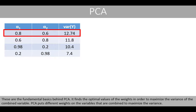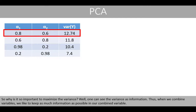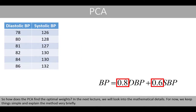According to our analysis, we select weights 0.8 and 0.6 because they generate the maximum variance of the combined variable. These are the fundamental basics behind PCA — it finds optimal weight values to maximize the variance of the combined variable. So why is it so important to maximize the variance? One can see variance as information — thus, when we combine variables, we want to keep as much information as possible in our combined variable. In the next lecture, we will look into the mathematical details.